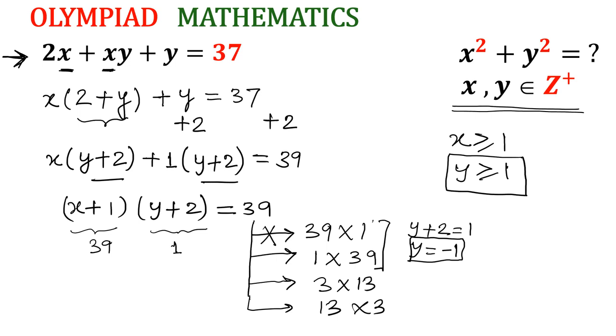Now come to the second case. That means (x plus 1) equals 1 and (y plus 2) equals 39. So x plus 1 equals 1 means x equals 0, which is again unacceptable because x is a positive integer.